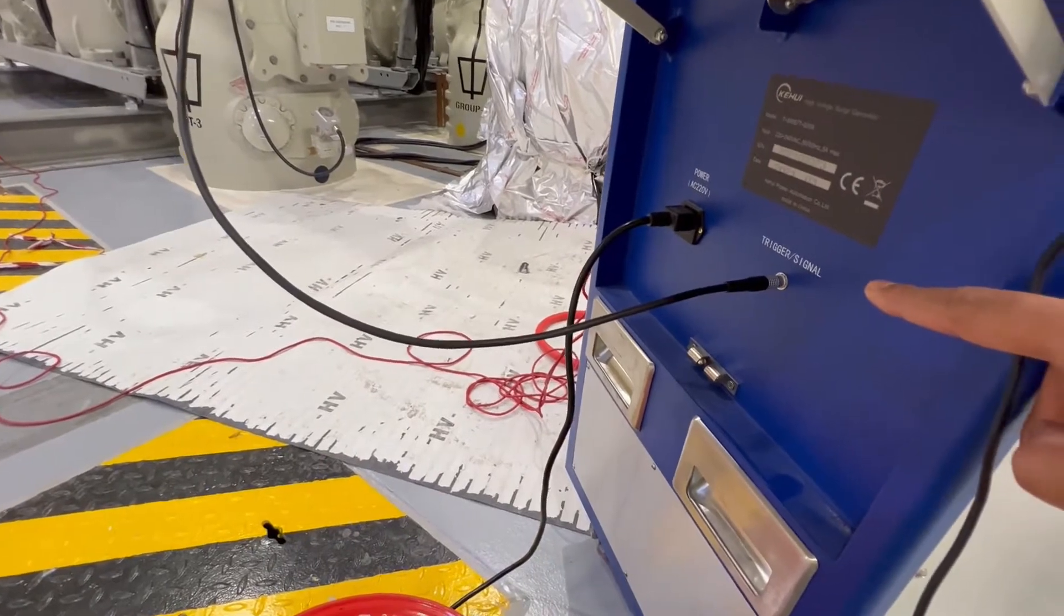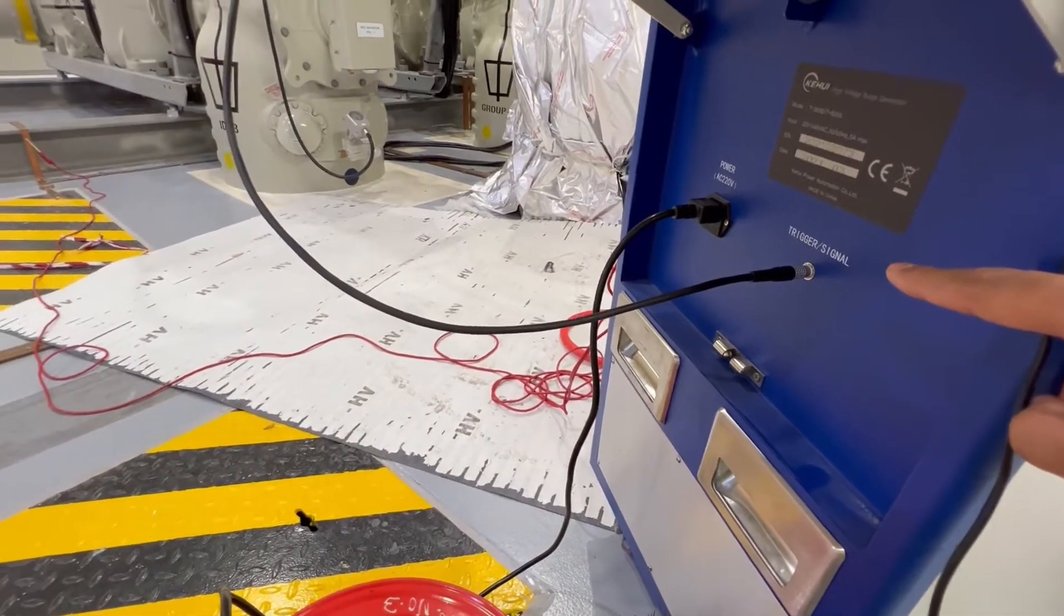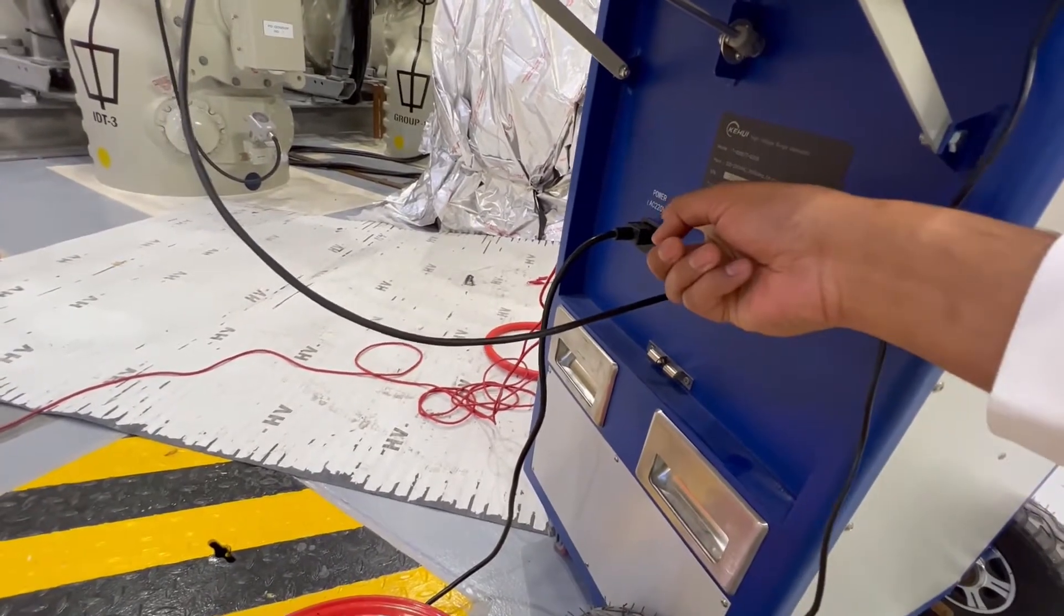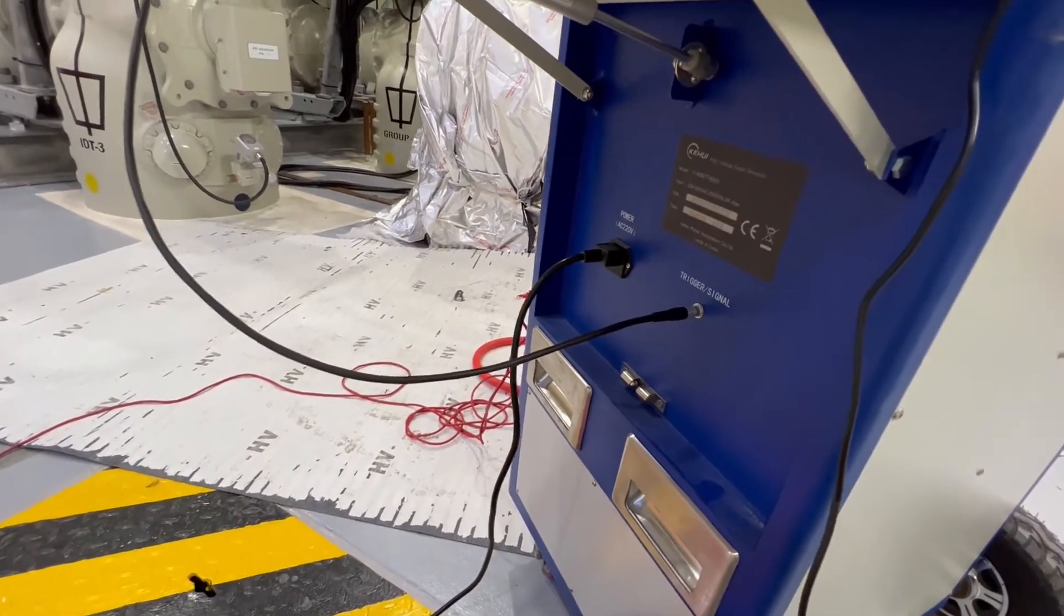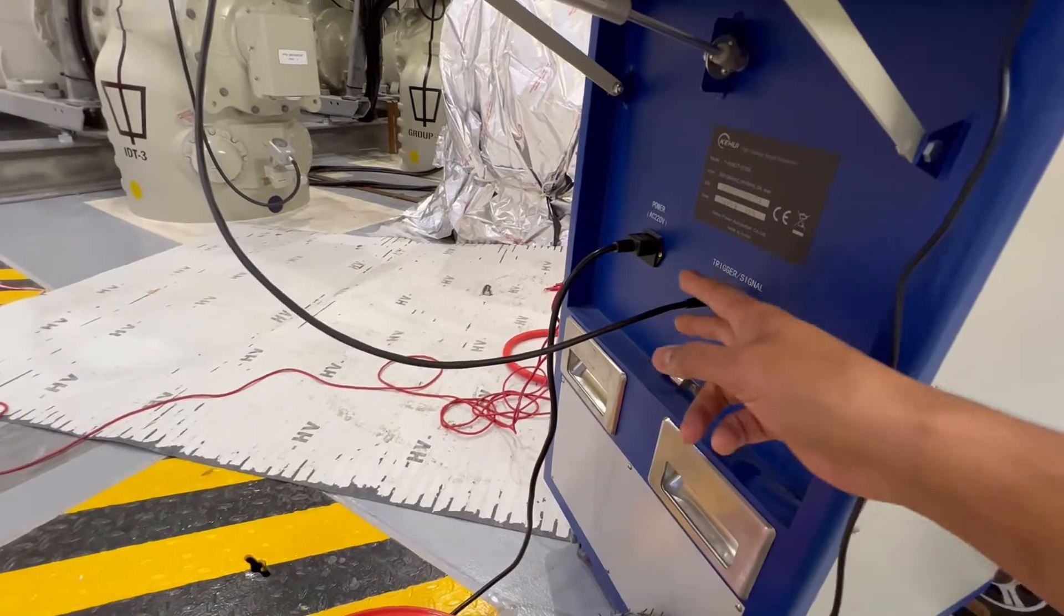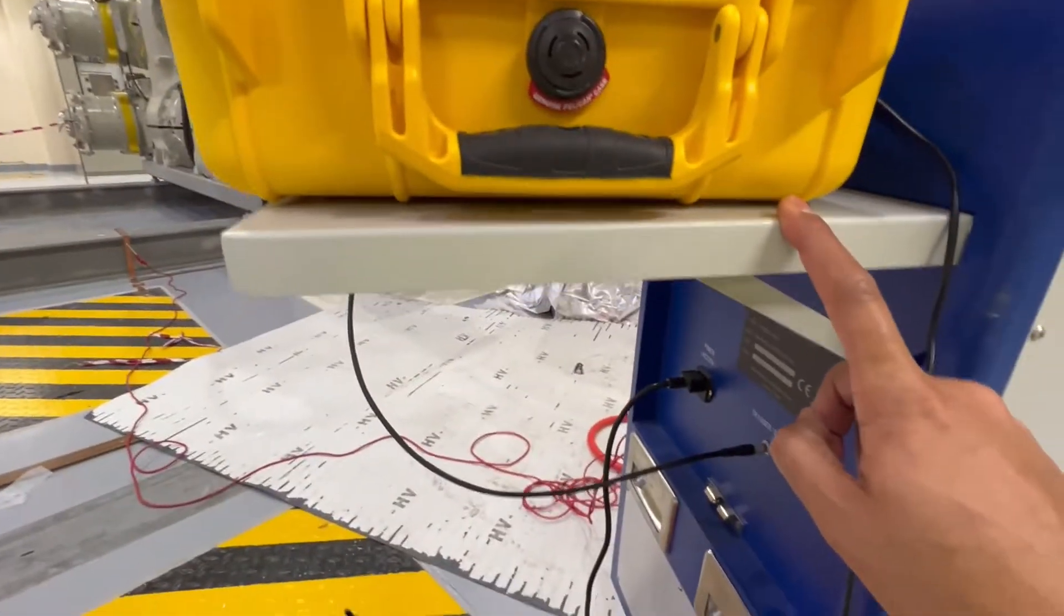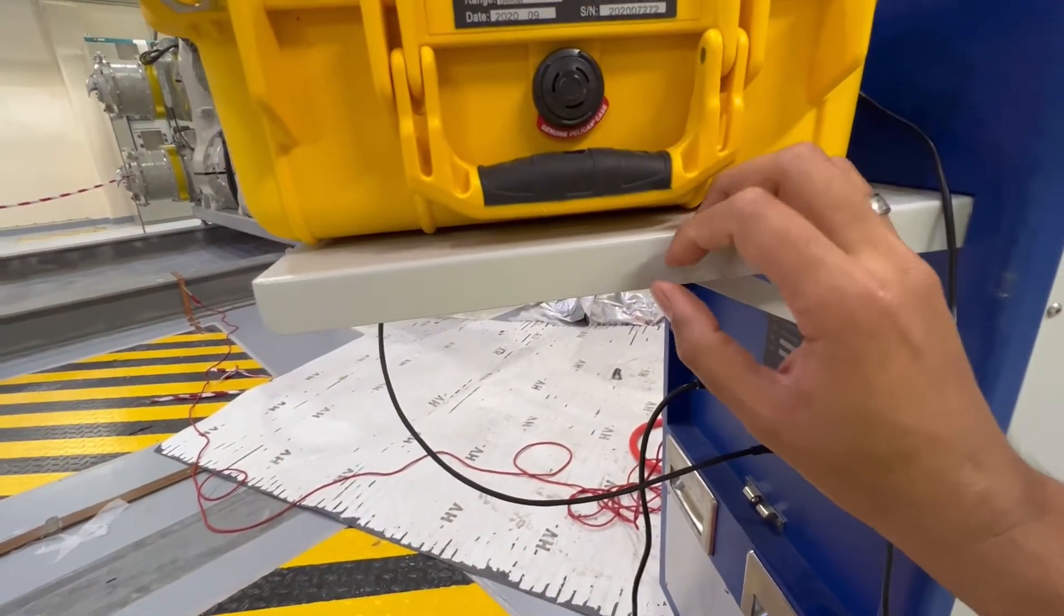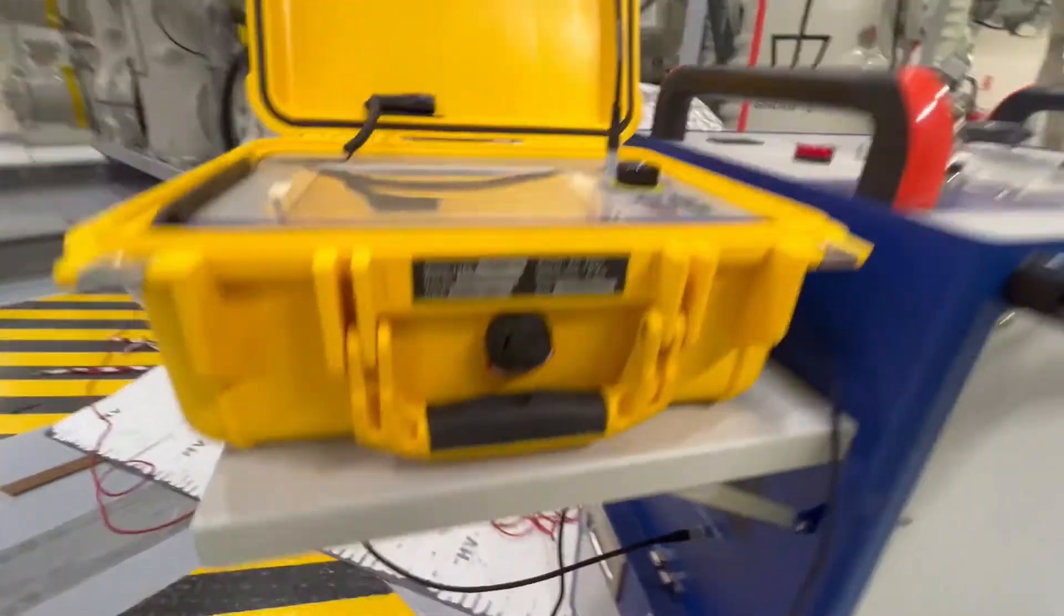The surge generator is powered through an AC 220 volt power supply which goes to the surge generator. This is a handle which helps to keep the fault locator intact so that it is easy for doing cable fault location.